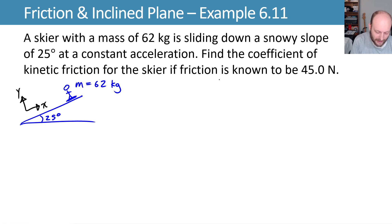And we want to find the coefficient of kinetic friction for the skier if we know friction is 45 newtons. So we're sliding—this is going to be kinetic friction, which means I know the force of friction is equal to kinetic friction, which is μₖN, and that has to equal 45 newtons. So if I want to find μₖ, all I need is the normal force, and now I can get my coefficient of kinetic friction.